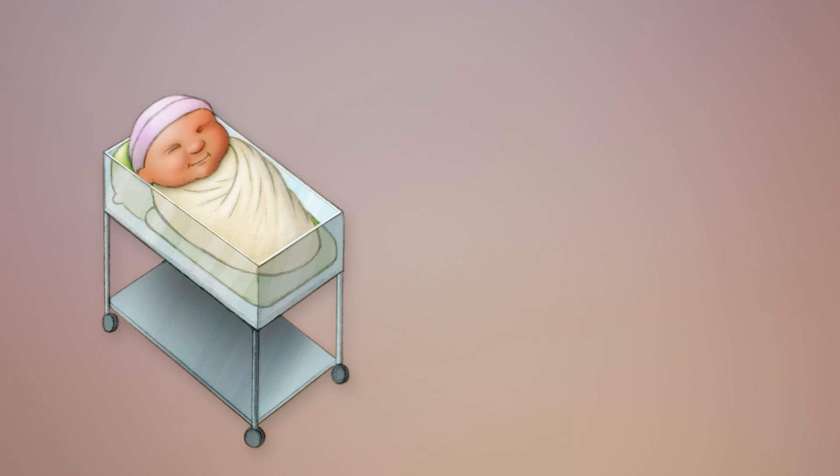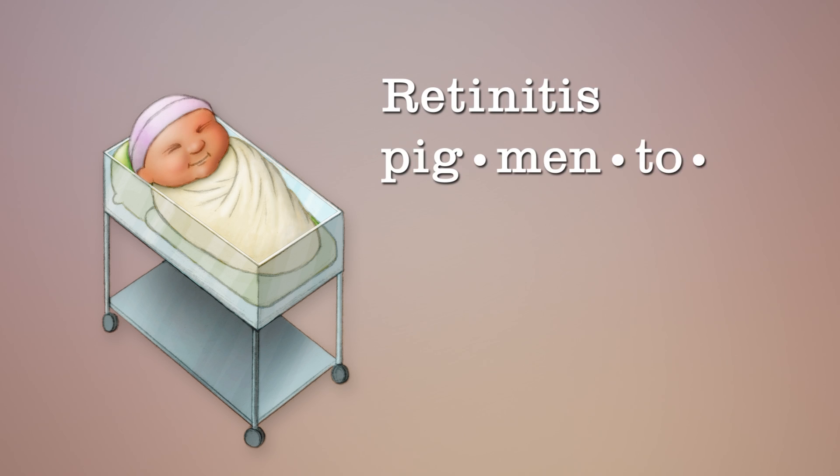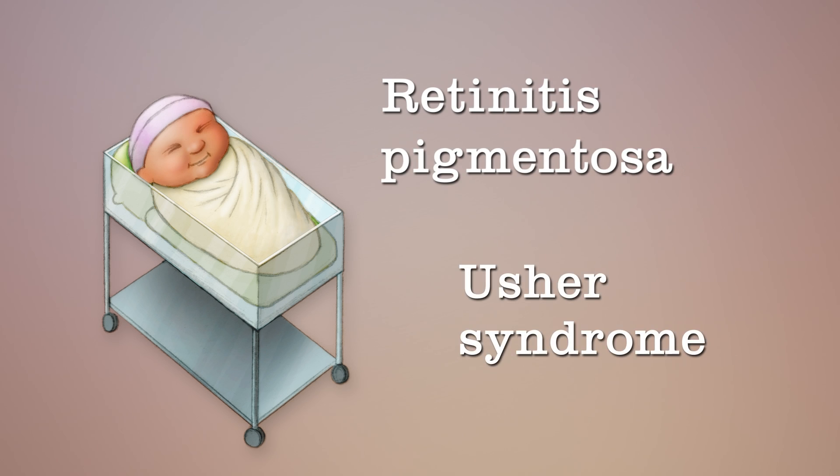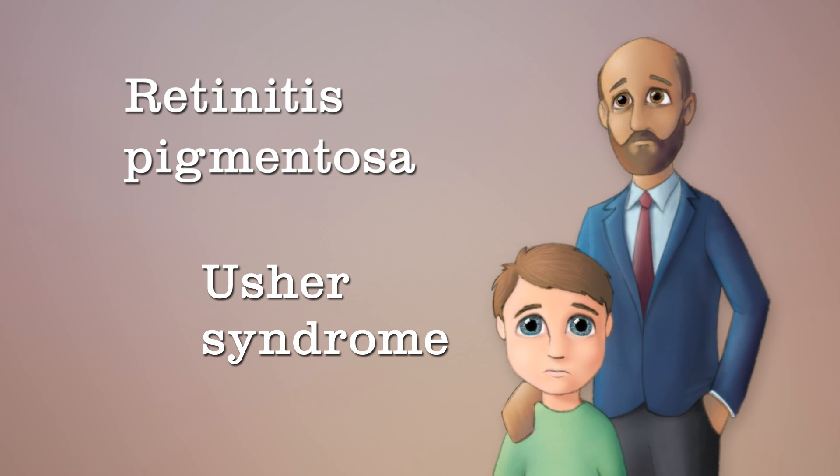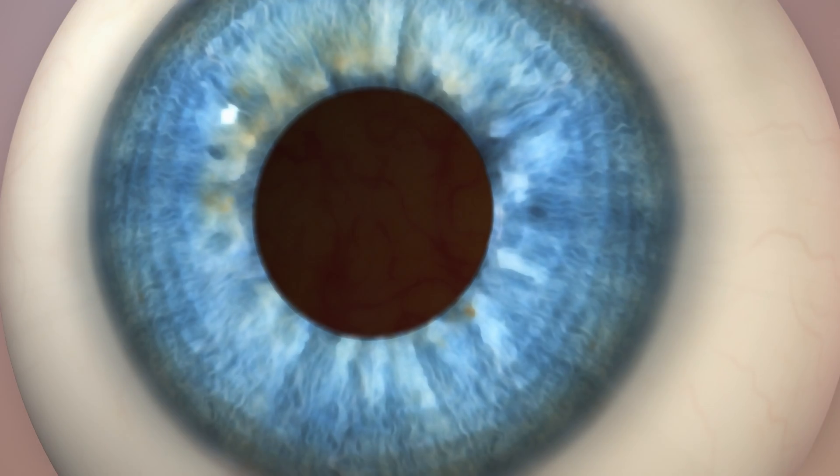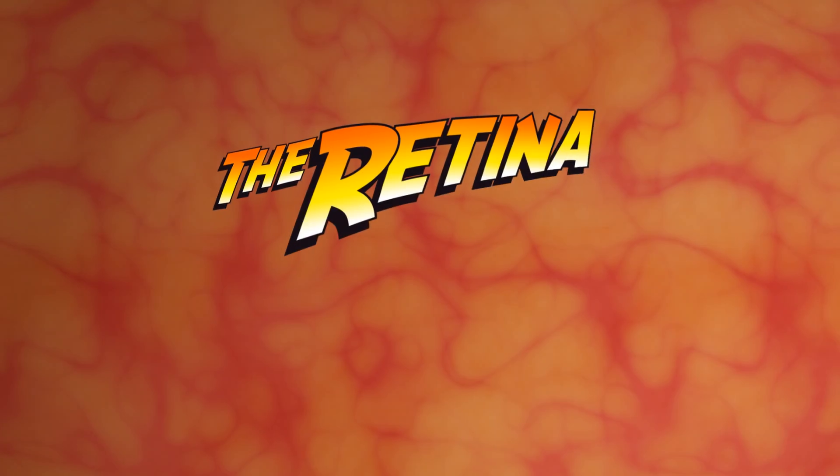We tend to think of blindness as something you're born with, but in fact, with many diseases like retinitis pigmentosa and Usher's syndrome, blindness can start developing when you're a kid or even when you're an adult. Both of these rare genetic diseases affect the retina, the screen at the back of the eye that detects light and helps us see.